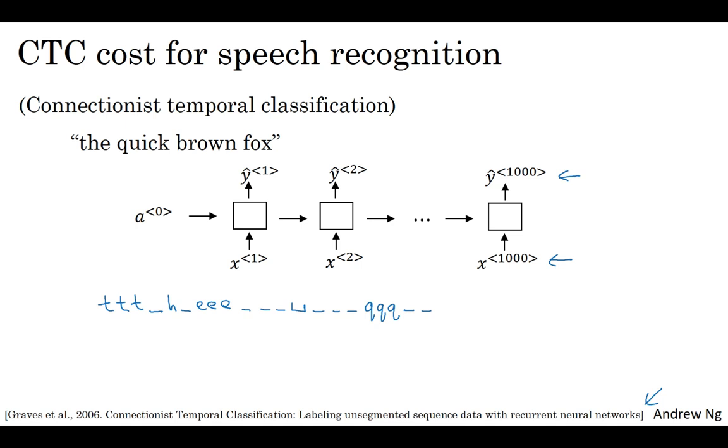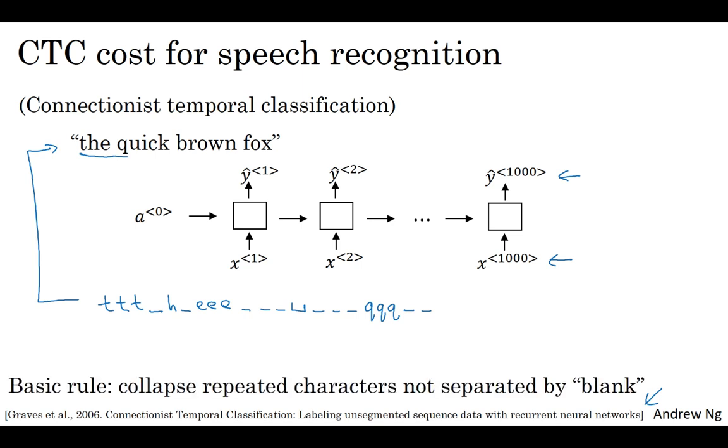This is considered a correct output for the first part of the space quick with the Q. The basic rule for the CTC cost function is to collapse repeated characters not separated by blank. To be clear, I'm using this underscore to denote the special blank character, and that's different than the space character. By collapsing repeated characters not separated by blank, it collapses the sequence into T-H-E-space-Q.